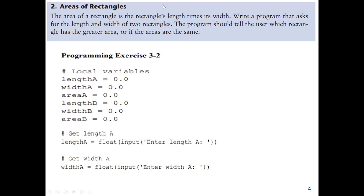This program will find the area of two rectangles. The formula for area is length times width. For the first rectangle, we enter the length and width and find its area. For the second rectangle, we enter the length and width and find its area. Then we use the selection statement to compare the two areas — which one is greater, which is lesser, or if they are the same. We need six variables: length A, width A, length B, width B to store the inputs, and area A and area B to store the calculated areas.